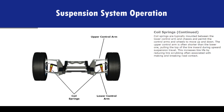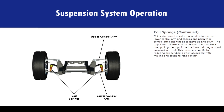Coil springs are typically mounted between the lower control arm and chassis, and permit the control arms and wheels to move up and down. The upper control arm is often shorter than the lower one, pulling the top of the tire inward during upward suspension travel. This increases tire life by reducing tire scrubbing often associated with making and breaking road contact.